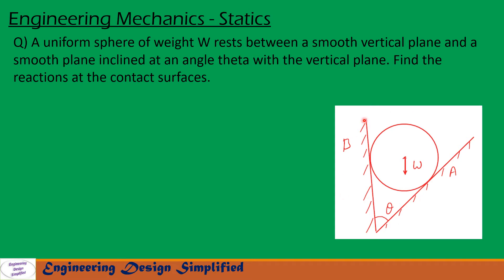In this problem, we have a vertical plane and another plane at an angle theta with the vertical. A smooth sphere is resting between these two planes whose weight is w acting downwards. We need to find reactions at surface A and at surface B. Let us see in the next slides how to solve this problem.